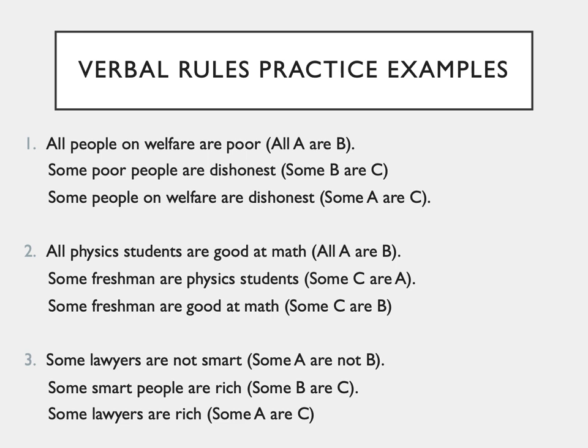Let's try our last example: some lawyers are not smart; some smart people are rich; some lawyers are rich. Step one: if the conclusion is negative, one premise must be negative — and if one premise is negative, the conclusion must be negative. You'll notice that premise one is negative. However, the conclusion is not negative. Therefore, we have failed at step one of the verbal rules and can determine that this last example is invalid.